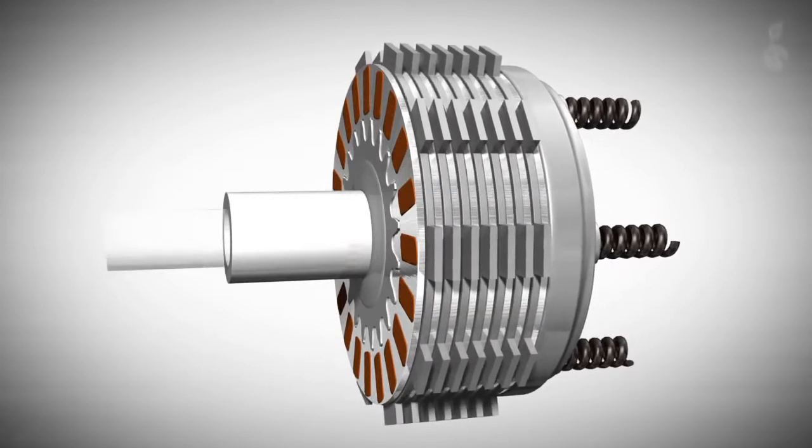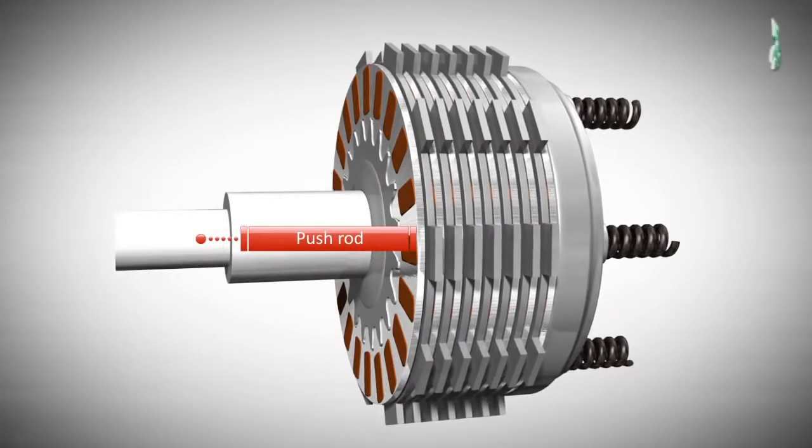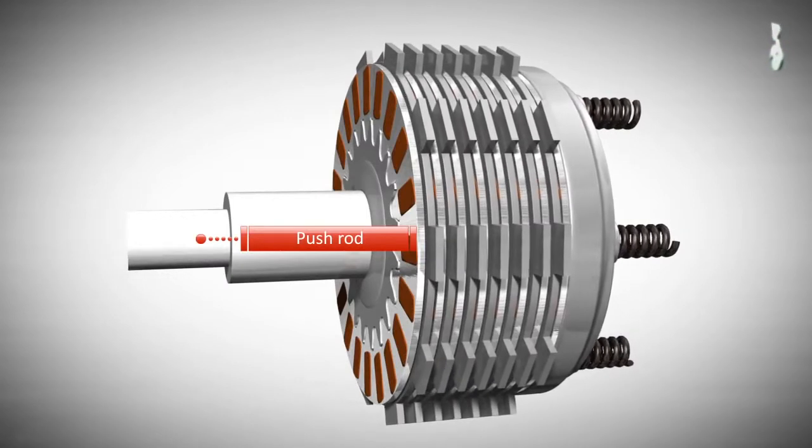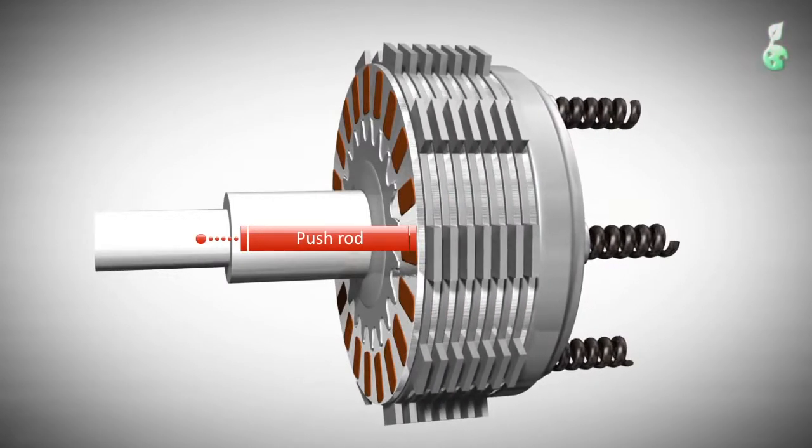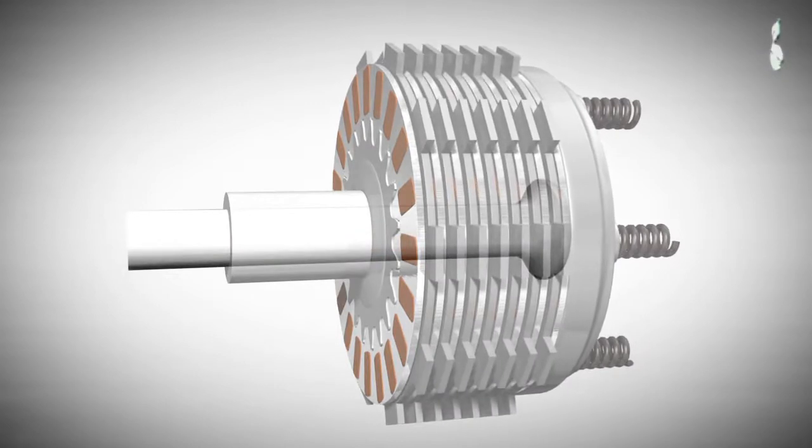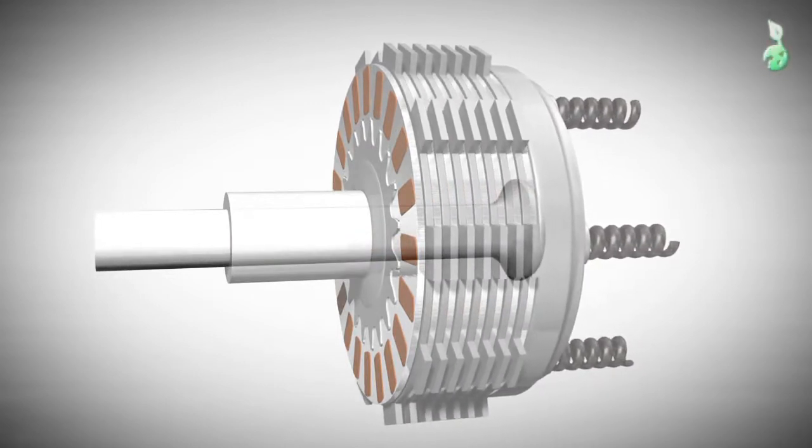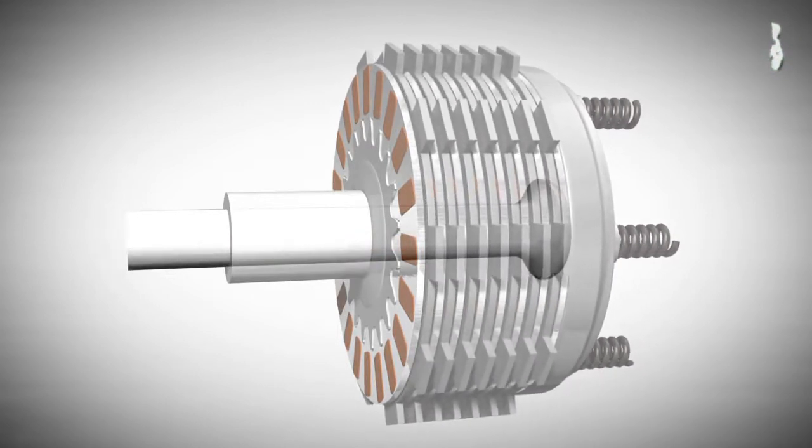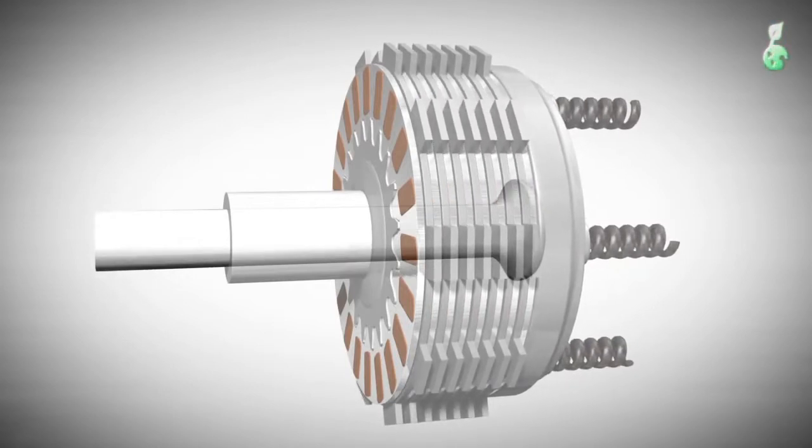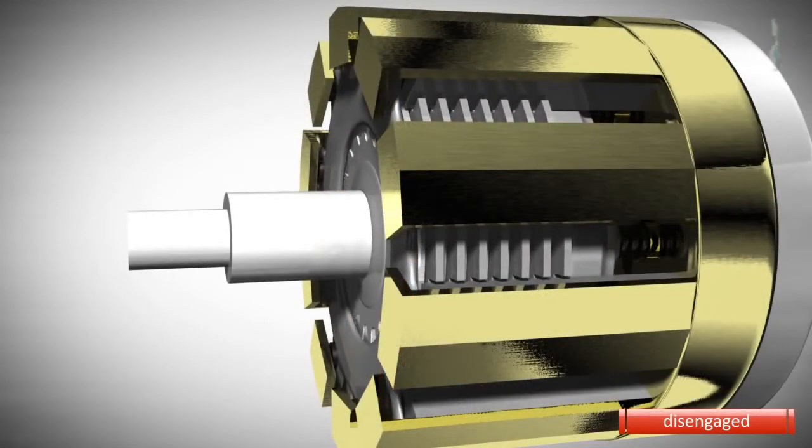Applying pressure to the pressure plate and the coil springs from the other side will release the pressure on the clutch pack. This is usually done by a push rod. This push rod may be connected to a clutch lever that the rider of a motorcycle can use to disconnect the transmission from the engine.